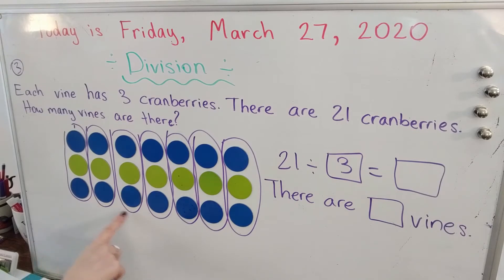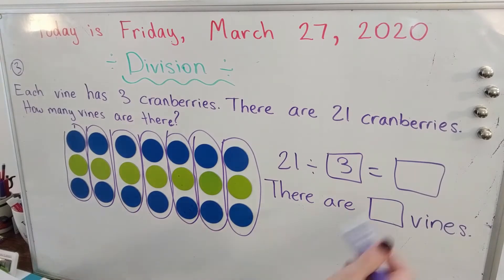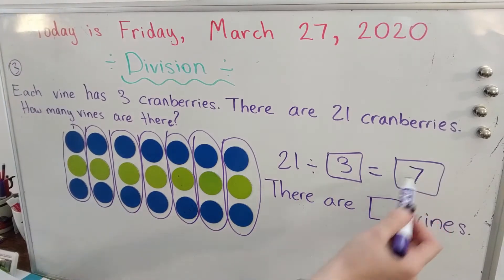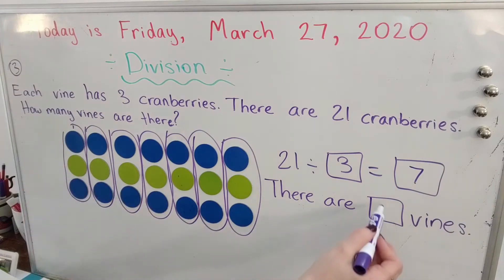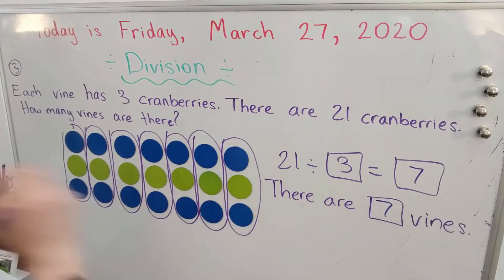Now let's find out how many groups there are — one, two, three, four, five, six, seven. There are seven vines.